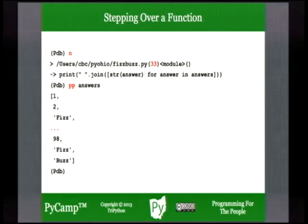The identifier 'answers' in the global namespace will be bound to a list of strings. There's a built-in 'pp' debugger command that will use Python's pprint module — the pprint function — that takes complex or long Python objects and prints them out in a readable fashion. If you have a very long list, it will print out all the elements on separate lines instead of one long line.